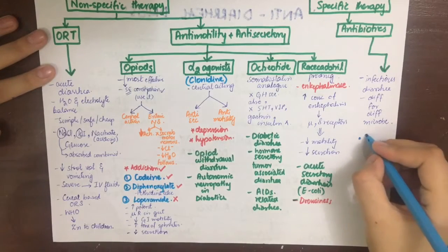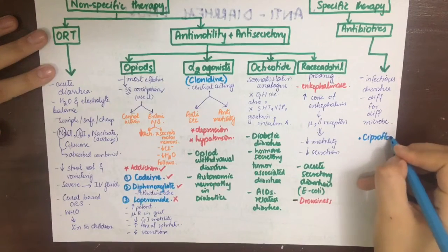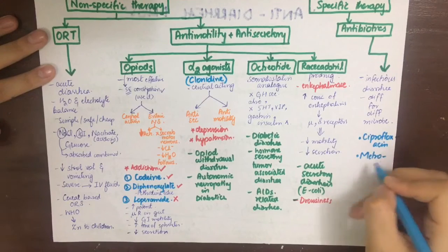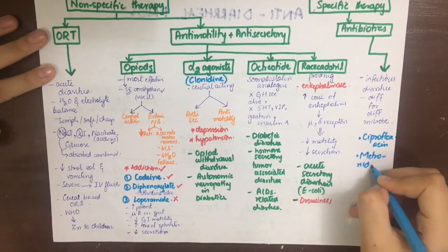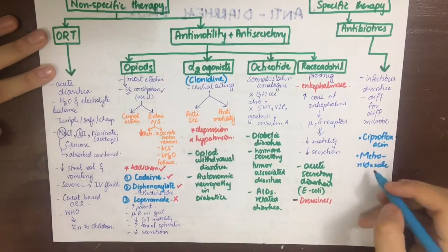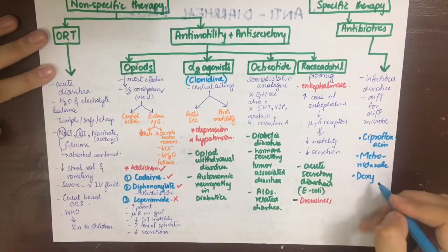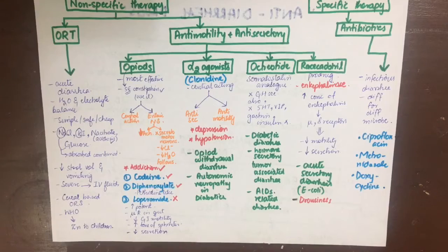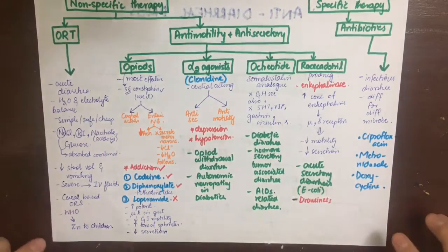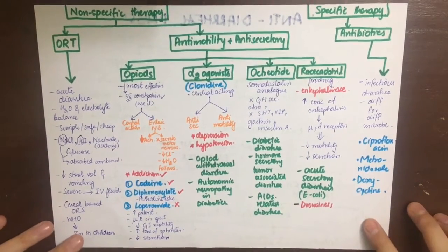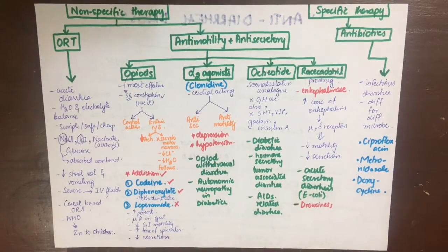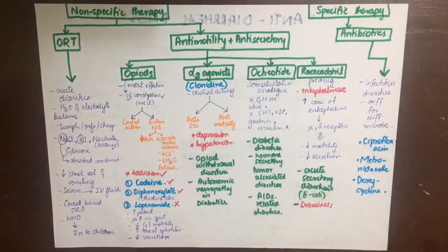Lastly, we can provide specific therapy if there is a chronic infection. This differs for different organisms associated with diarrhea, such as Shigella, Salmonella, E. coli, and Entamoeba histolytica. The chief antibiotics used are ciprofloxacin, doxycycline, and metronidazole. That's all about anti-diarrheal agents.